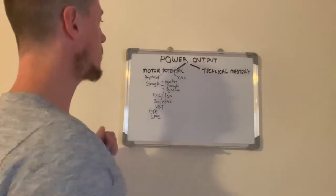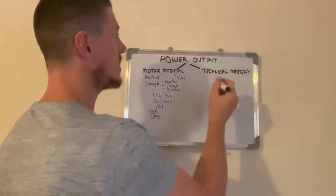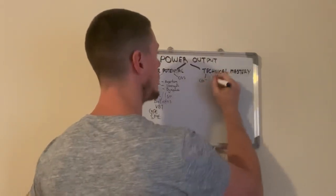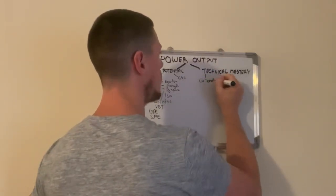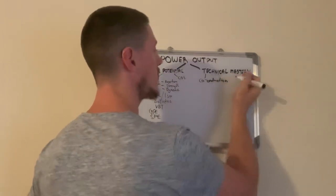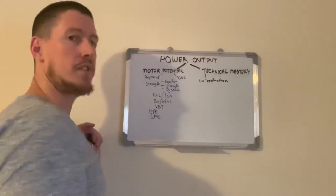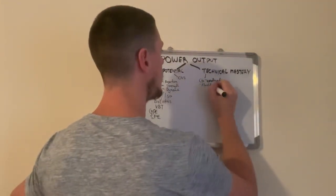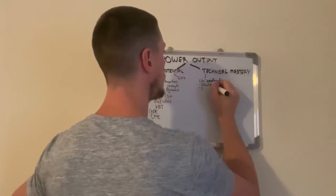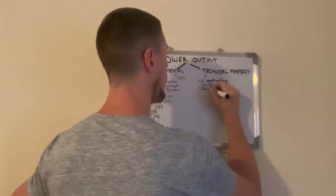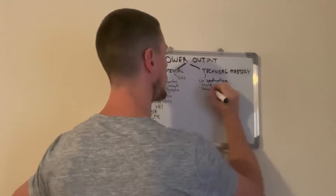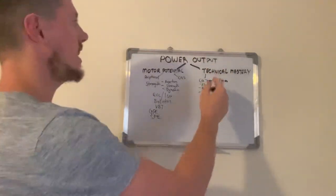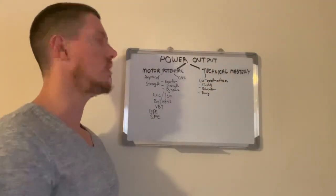Then we've got things like technical mastery, and this is basically coordination. Coordination is essentially the ability to control degrees of freedom, and this could be things like fluidity, relaxation, timing, and so on. This is basically training the specific skill of your event.